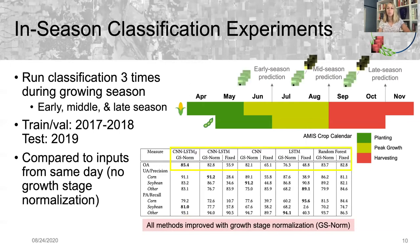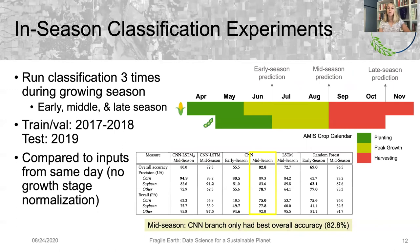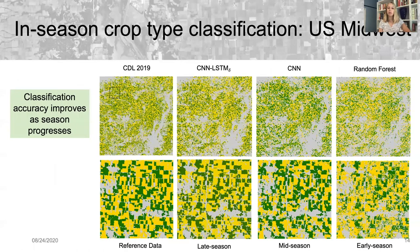What we found was that growth stage normalization improved the performance for all methods, and that our method had the best overall accuracy of 85.4% for the late season classification. For the mid-season classification, the CNN branch had the best overall accuracy of 82.8%. And for the early season classification, we found that the random forest with growth stage normalization had the best accuracy of 69%. When we look at these predictions spatially, we can see qualitatively how the classification accuracy improves as the season progresses and we have more information about the growth stages.